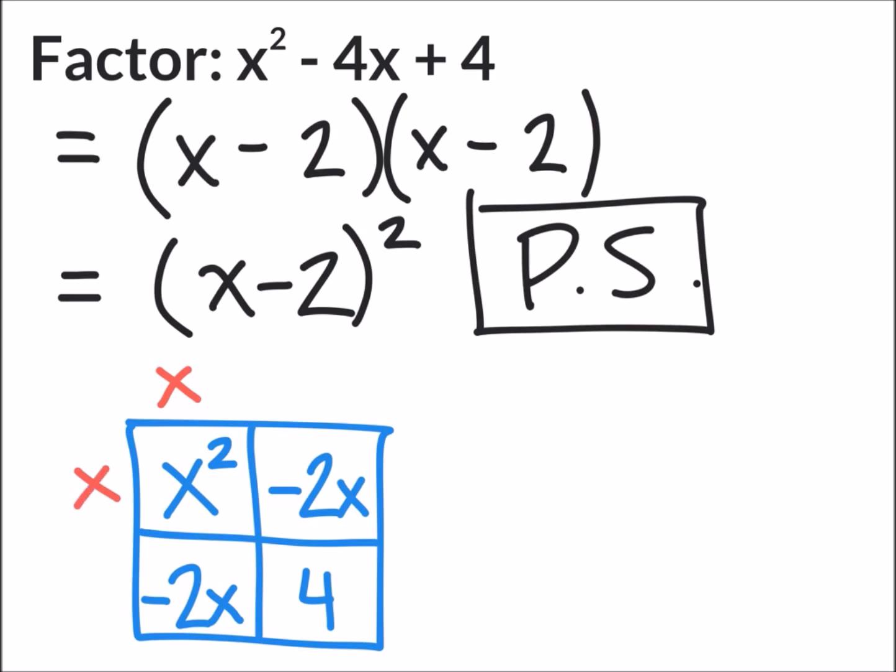x times x gives us x², x times -2 will give us -2x. On top x times -2 will give us -2x again and -2 times -2 will give us positive 4.